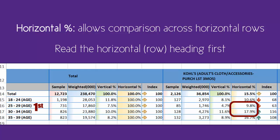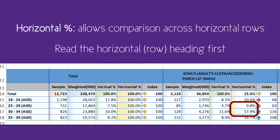Read in order of the red numbers. Of the people who are age 25 to 29, 9.8% of them said they shopped at Kohl's for adult clothing or accessories in the last three months. But if we look at the next number, we can see that of the people aged 30 to 34, 17.9% of them said they shopped at Kohl's for adult clothing. In this comparison, we can see that's almost double the percentage of the people just slightly younger.